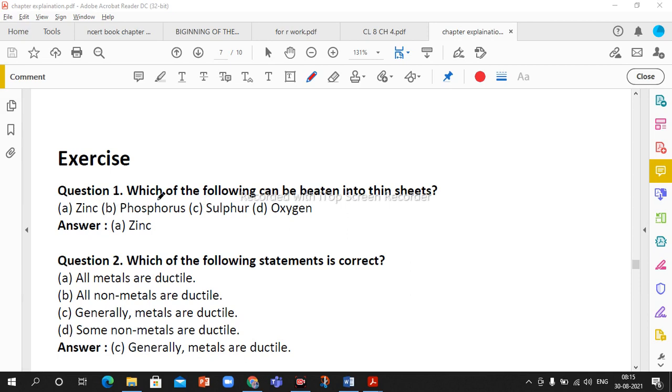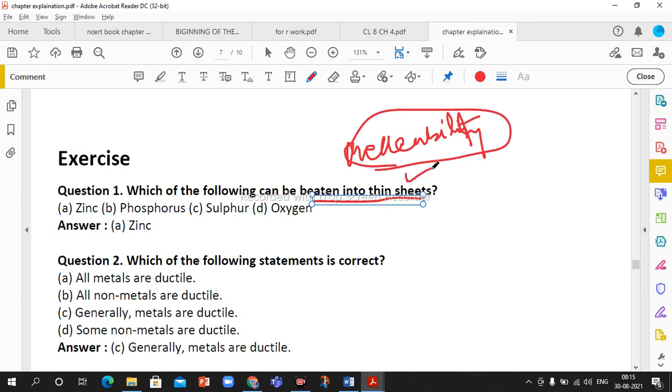The first question is which of the following can be beaten into thin sheets. What is the property of metal by which it can be beaten into thin sheet? That property is known as malleability. This means that metal has a property which we can change into sheets. Zinc is a metal, so zinc can be beaten into thin sheets.